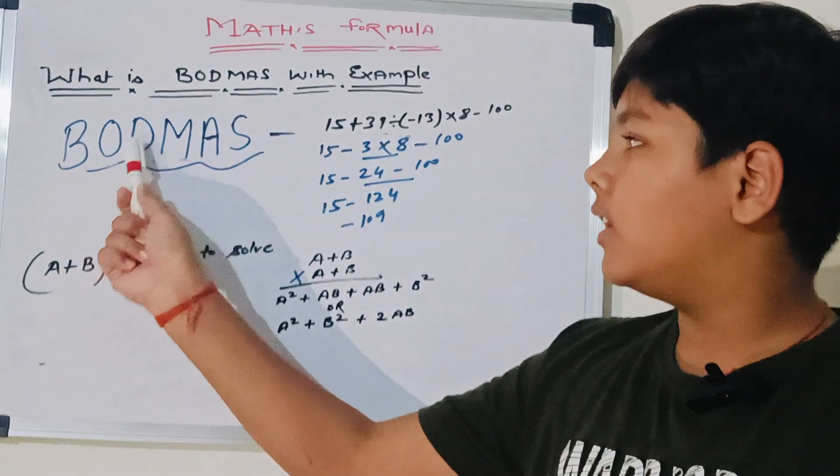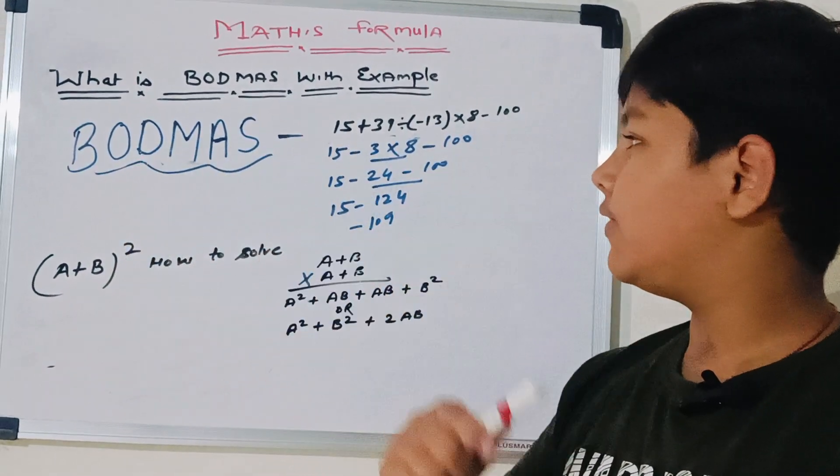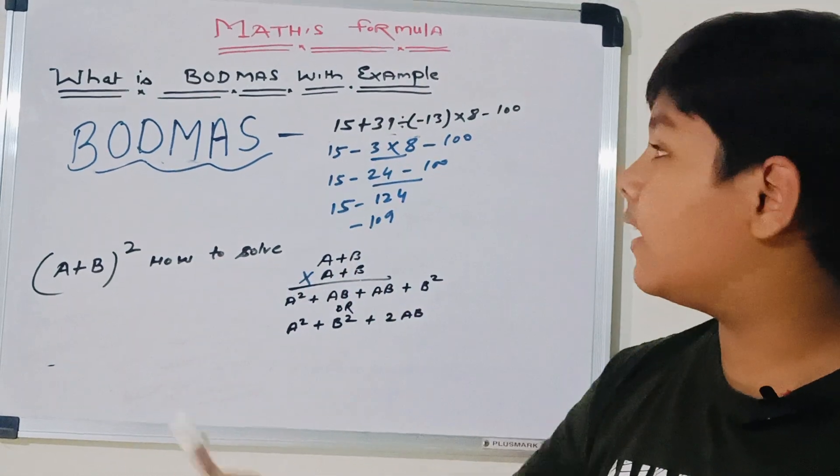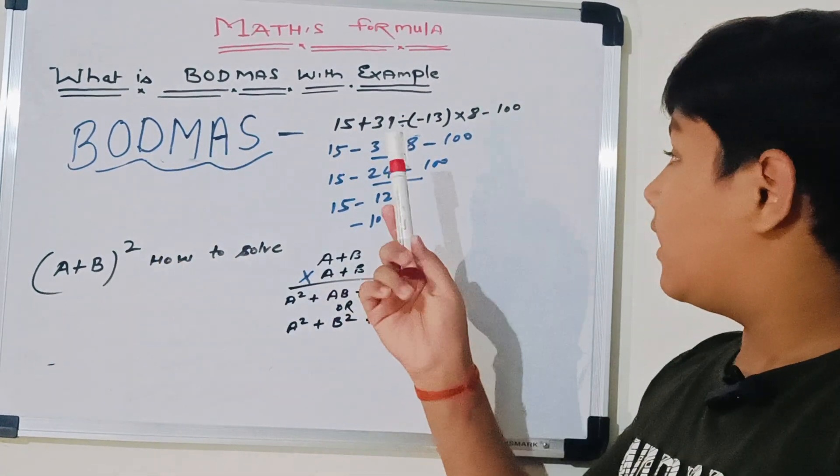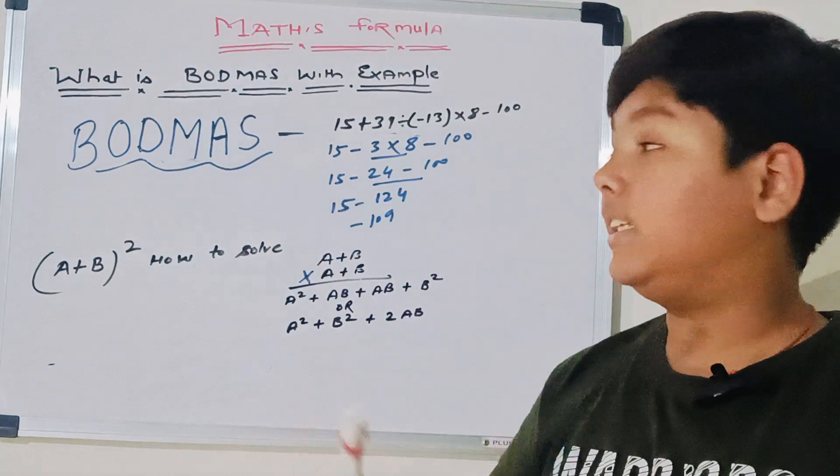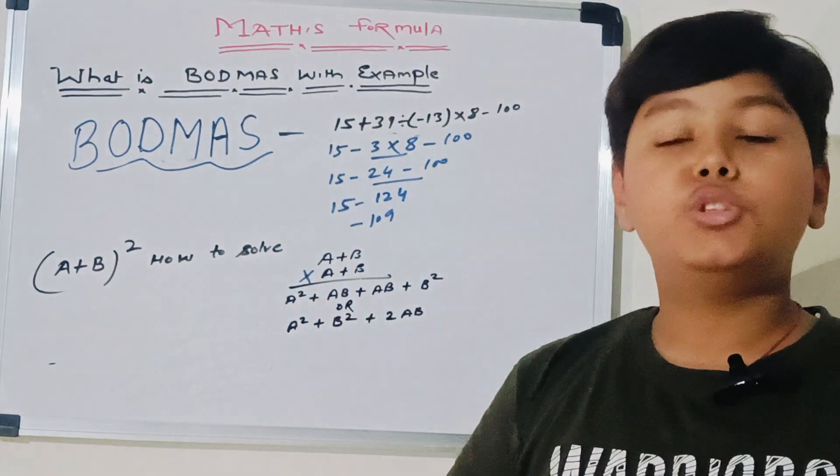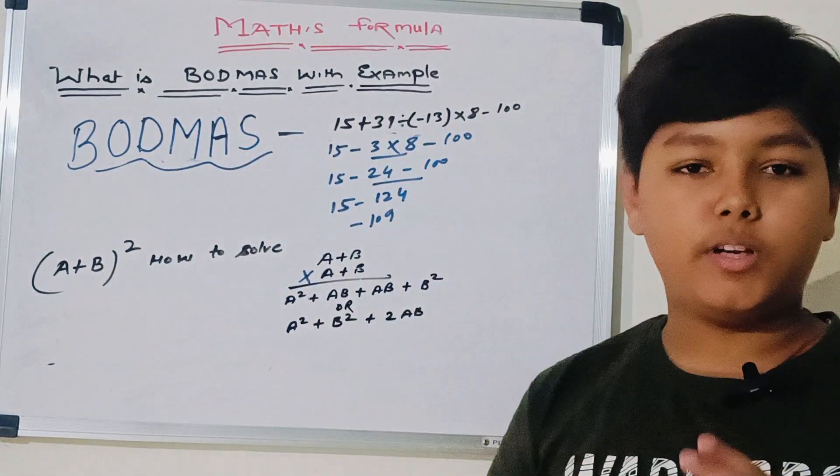After that, we have to search for division. But division we have done there. Then multiplication. Here a multiplication is there. Minus 3 multiplied by 8. So its answer will be minus 24.